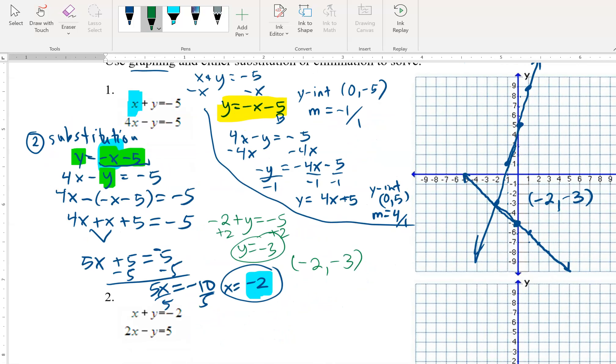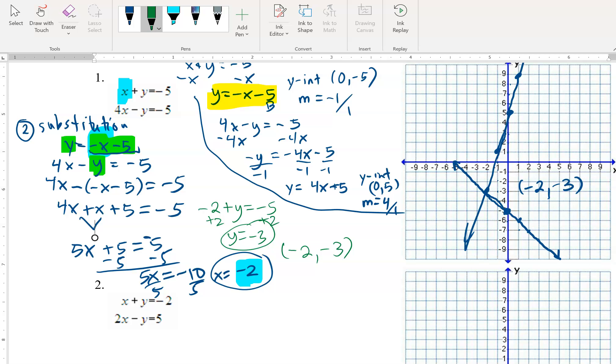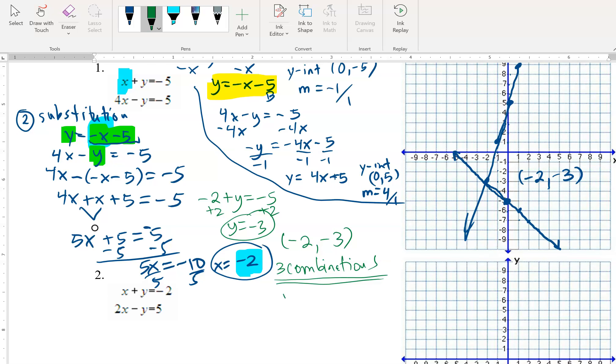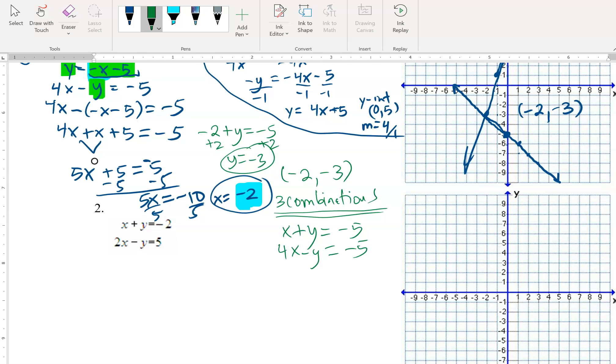Our last method is going to be elimination or combinations. And this one is actually already set up for elimination. If I take that x plus y equals negative 5, and 4x minus y equals negative 5, then we can solve this. This is ready to combine, because those y's are already ready to cancel. We have a positive 1y and a negative 1y. So when I combine, we combine x plus 4x is 5x. Those y's will cancel, and then we have negative 5 minus 5, negative 10, divided by the 5, x equals negative 2.